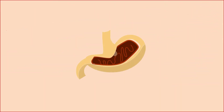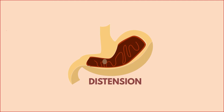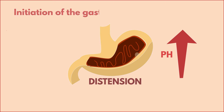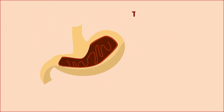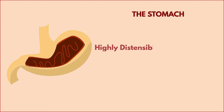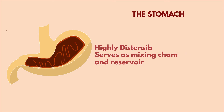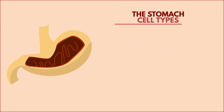Upon entering the stomach, the food bolus leads to distension and an increase in pH. The result is the initiation of the gastric phase, which promotes stomach activity through increased secretion of gastric juice and increased motility. The stomach — the most distensible part of the GI tract — serves as a mixing chamber and holding reservoir, and contains several different cell types in the mucosal lining.